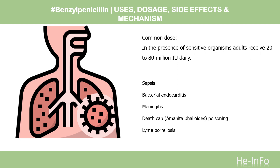Dose - Sepsis: Sepsis induced by gram-negative bacilli (E. coli, E. aerogenes, A. faecalis, Salmonella, Shigella, and P. mirabilis) in the presence of sensitive organisms — adults receive 20 to 80 million IU daily. Bacterial endocarditis: 10 to 80 million IU daily, in combination with aminoglycosides.